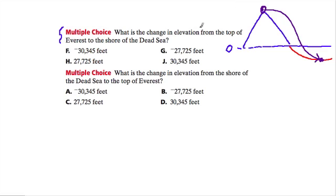So I actually forgot to write down the actual heights of these two. Let me pause this and put that in there. Okay, so they tell us that Mount Everest is 29,035 feet above sea level, and the Dead Sea shore is 1,310 feet below sea level. And so we can think of that as negative 1,310.